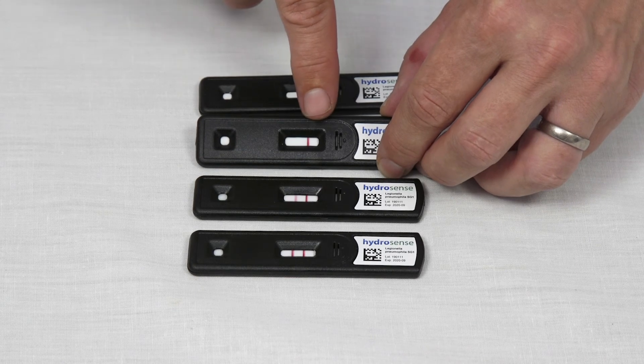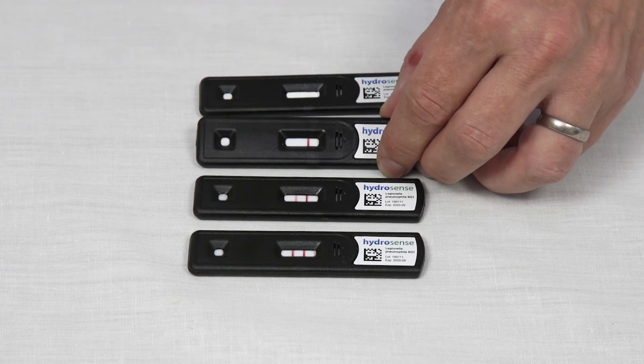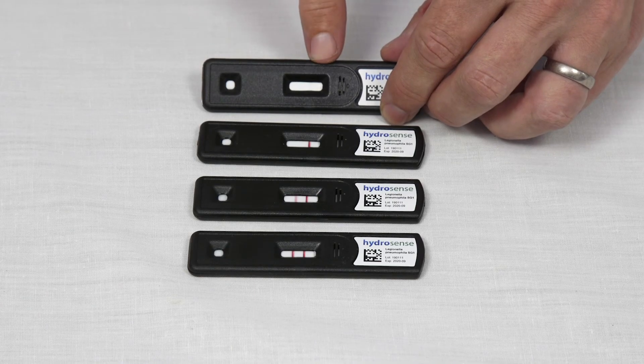If no test line is present but there is a control line, then the test is negative and Legionella pneumophila serogroup 1 has not been detected. If no control line is present, the test is invalid and should be repeated.